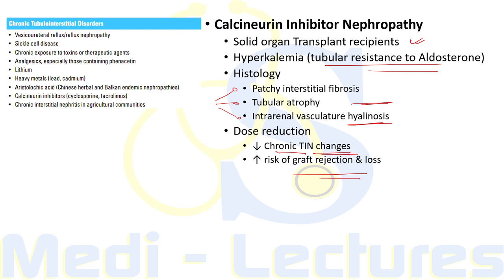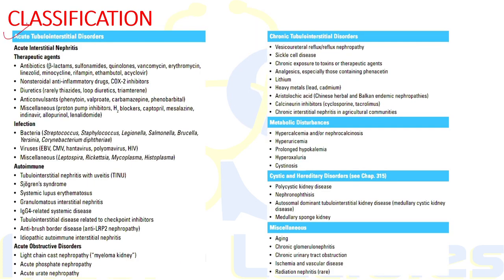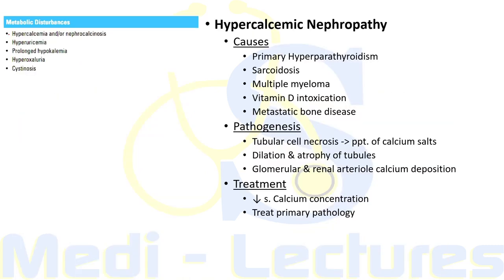Moving to metabolic disturbances: these include hypercalcemia, hyperuricemia, prolonged hypokalemia, hyperoxaluria, and cystinosis. For hypercalcemic nephropathy, causes of chronic hypercalcemia include primary hyperparathyroidism, sarcoidosis, multiple myeloma, vitamin D intoxication, and metastatic bone disease. Pathogenesis involves tubular cell necrosis leading to precipitation of calcium salts, dilatation and atrophy of tubules, and calcium deposition in glomerular and renal arterioles. Treatment involves decreasing serum calcium toward normal and treating the primary pathology.